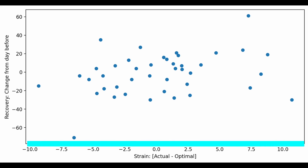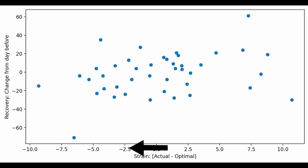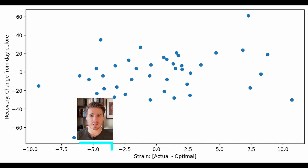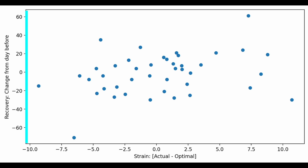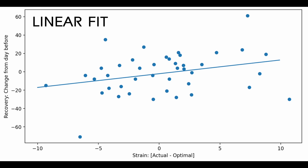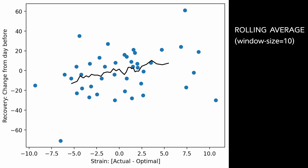But when I looked into the data, this was overwhelmingly not the case. On the x-axis is how much I actually pushed myself in a day versus what WHOOP recommended. Going farther left means I wasn't pushing as hard as recommended; going right means I pushed harder than recommended. The y-axis shows how my recovery improved the next day. You'd expect recovery to improve as I approach zero — WHOOP's recommendation — but weirdly, my recovery actually slightly improves as I overshoot WHOOP's recommendation more and more.